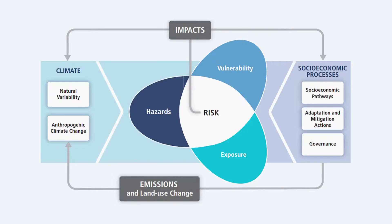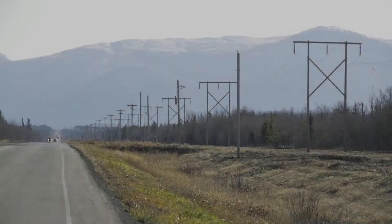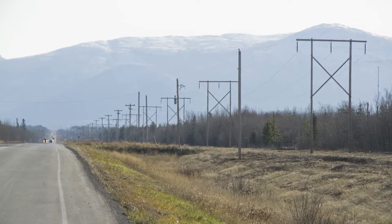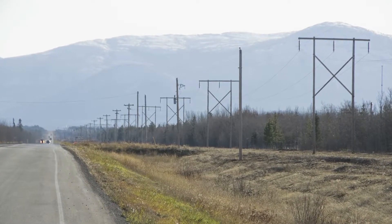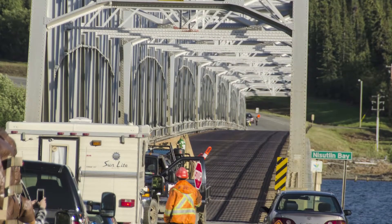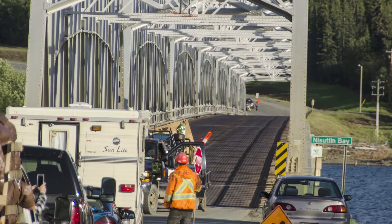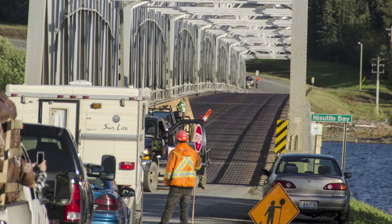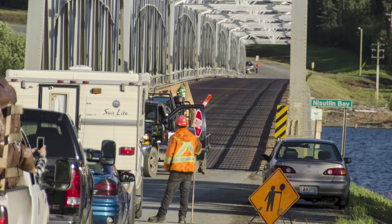Risk refers to the interaction of hazards, exposure, and vulnerability. Hazards are the physical impacts of climate change: increasing temperatures, sea level rise, invasive species, and extreme weather events such as flooding or wildfires. Exposure refers to the people, assets, or other things that we value which are in a location or situation affected by climate change hazards. Vulnerability refers to the sensitivity, susceptibility, or capacity of those people, assets, or values to adapt.